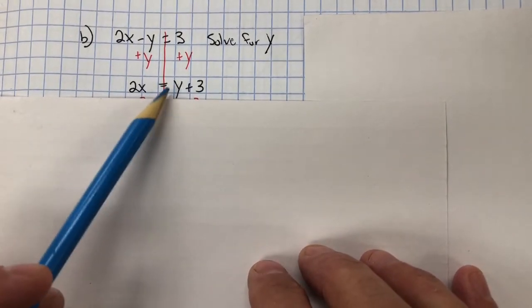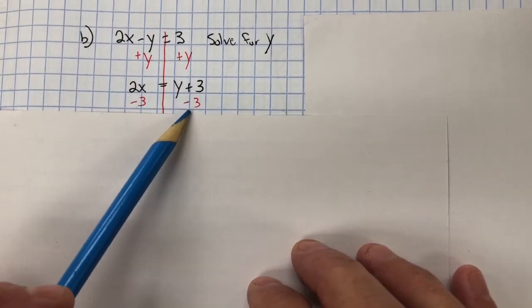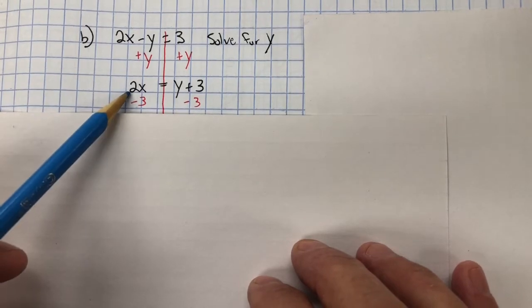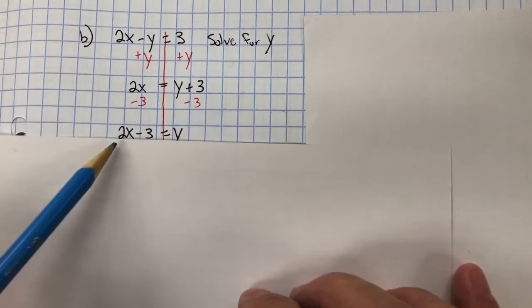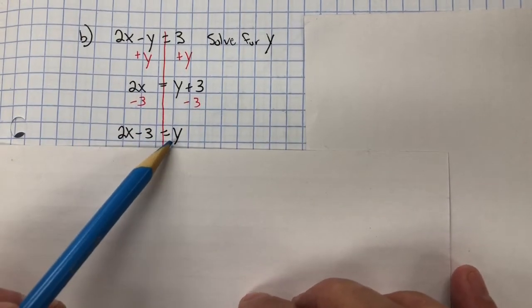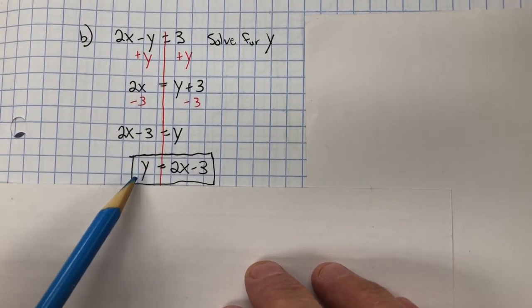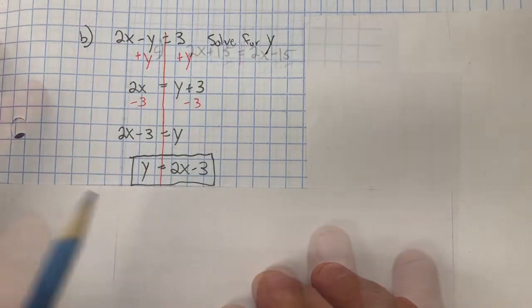Still don't have Y by itself, so the inverse property of addition is subtraction. I subtract 3 from both sides. On the left side, I have 2X minus 3. 2X minus 3 equals Y, and the proper way of writing it is Y equals 2X minus 3.